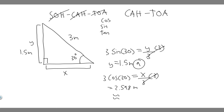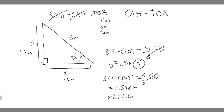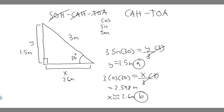I'm just going to round that to 2.6 meters. So 2.6 meters is x, the adjacent side, and this is your answer to B. So the opposite side is 1.5 meters and the adjacent side is 2.6 meters. Hopefully you found this useful.